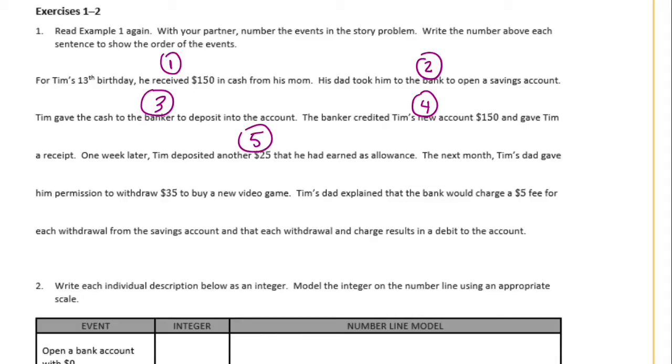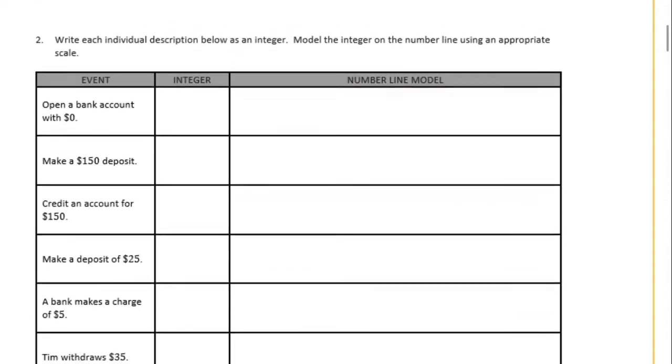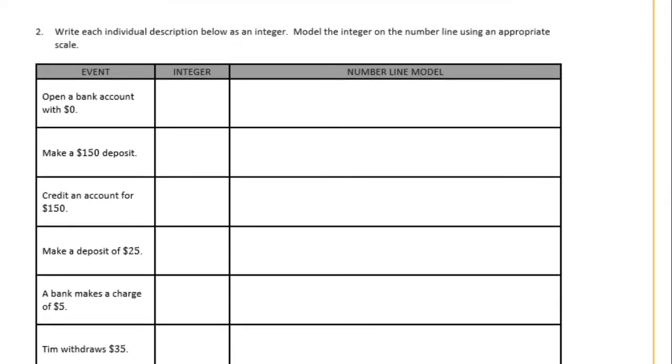So he credits his account and he gets a receipt. One week later Tim deposited another $25 that he had earned as allowance. So another week later deposits $25. The next month Tim's dad gave him permission to withdraw $35 to buy a new video game. So now he withdraws $35. Tim's dad explained that the bank would charge a $5 fee for each withdrawal from the savings account and that each withdrawal and charge results in a debit to the account. So lastly bank charges $5 fee for each withdrawal.